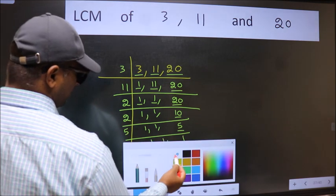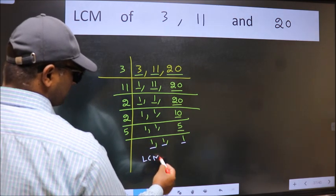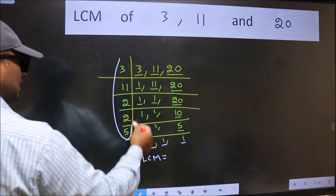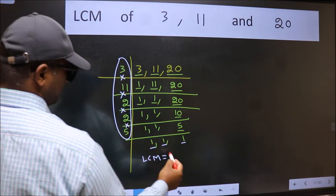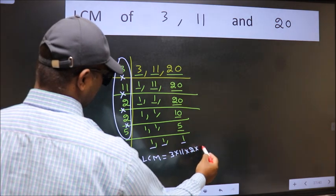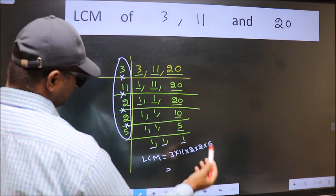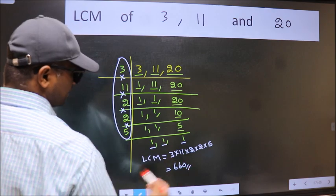So we got 1 in all the 3 places. So our LCM is, LCM is the product of these numbers. That is 3 into 11 into 2 into 2 into 5. When we multiply these numbers we get 660 is our LCM.